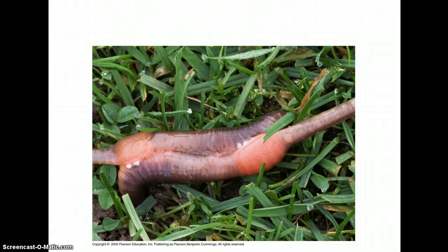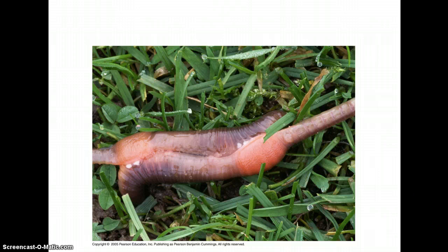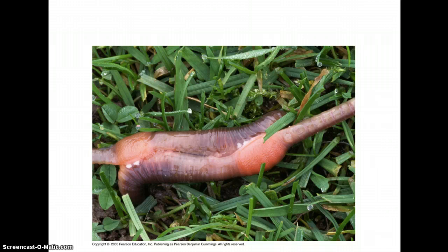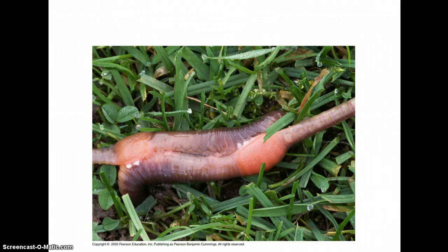Most animals are reproducing sexually, and most animals have separate male and female sexes. There are some, like earthworms, that are hermaphrodites — they are both male and female. They fertilize each other; they do not fertilize themselves, but they produce both male and female gametes, which is a bit unusual amongst animals.